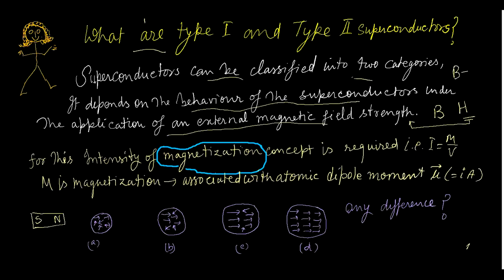These two physical quantities are associated with each other by the formula B = μ₀H. For the magnetization concept, the intensity of magnetization is defined by I, where I = M/V — that is, magnetization per unit volume is the intensity of magnetization.